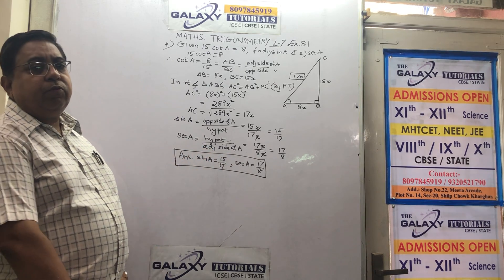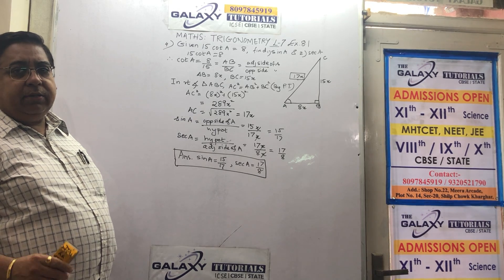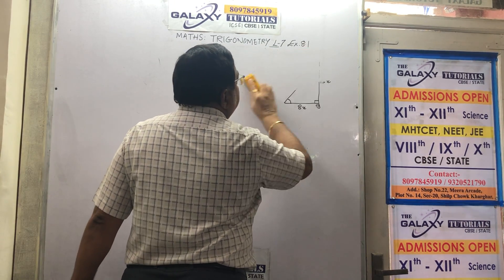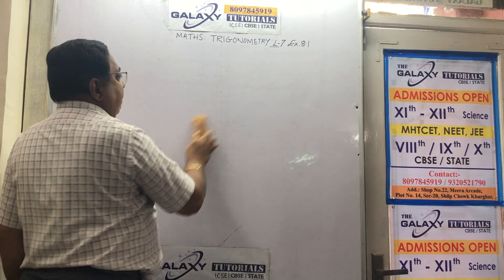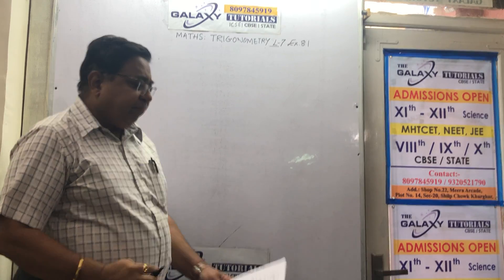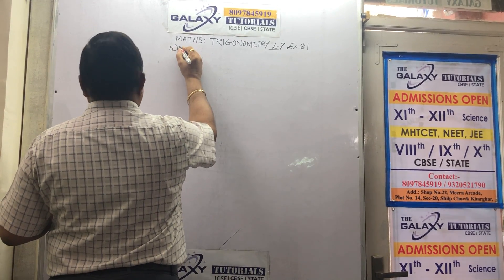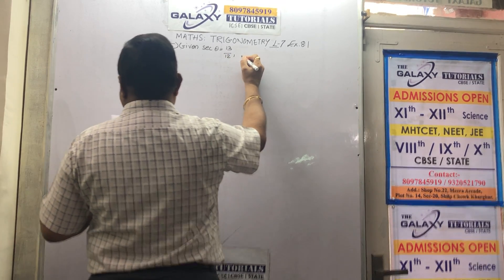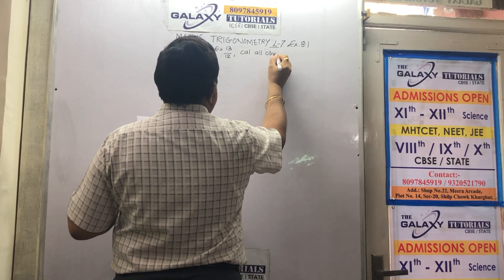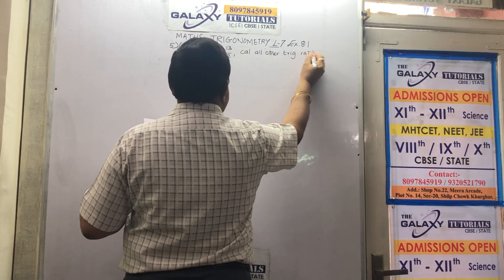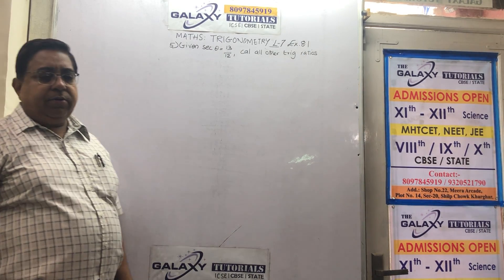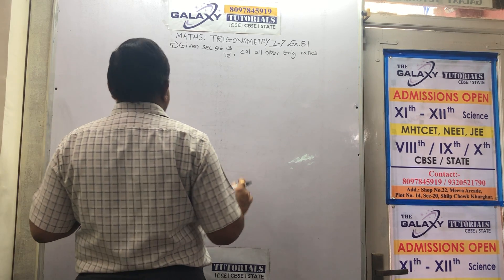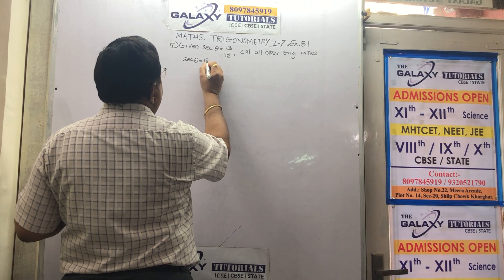So that was sum number 4. We will move to sum number 5. Please go through it, practice it, and then we go to the next sum. The fifth sum in your textbook: given sec θ equals 13 upon 12, calculate all other trigonometric ratios. We are given one ratio and have to find the others. Same type of sum, same method, using only basic formulas.